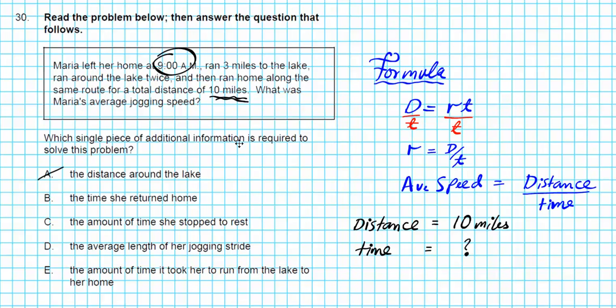The distance around the lake? No, that's not time provided for us. We can calculate what the distance around the lake is, but that's irrelevant since all we need is the total distance of 10 miles. The time she returned home. Voila. If she returned home at, let's say 11am for instance, what does that tell us? If she returns home at 11am, that tells us that she spent a total time of two hours, because 11 minus 9. So if the time that she returned is specified, that helps us calculate the total number of times she spent jogging. Divide the distance by that value and that will give us the average speed. Answer for number 30 is option letter B.